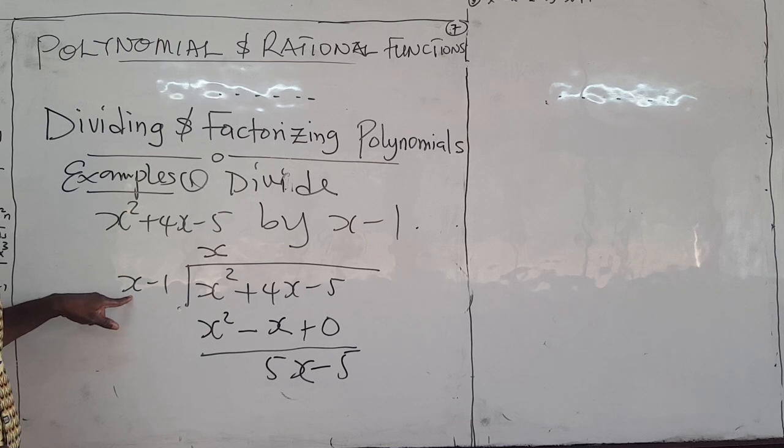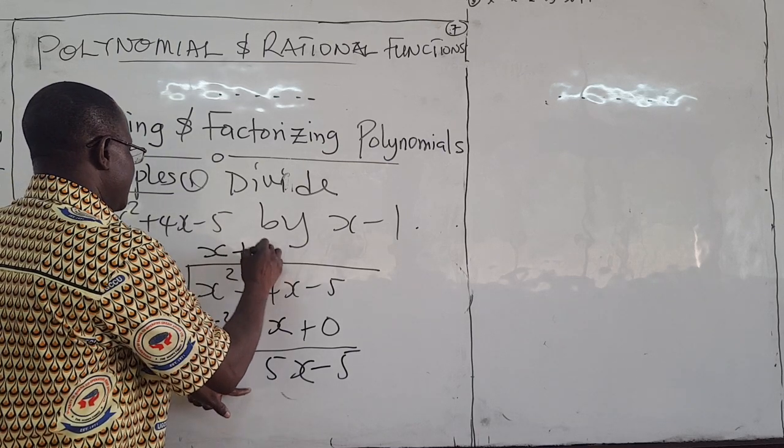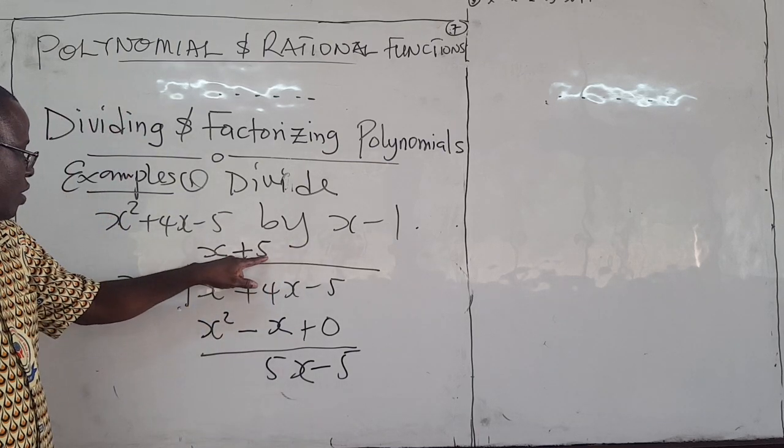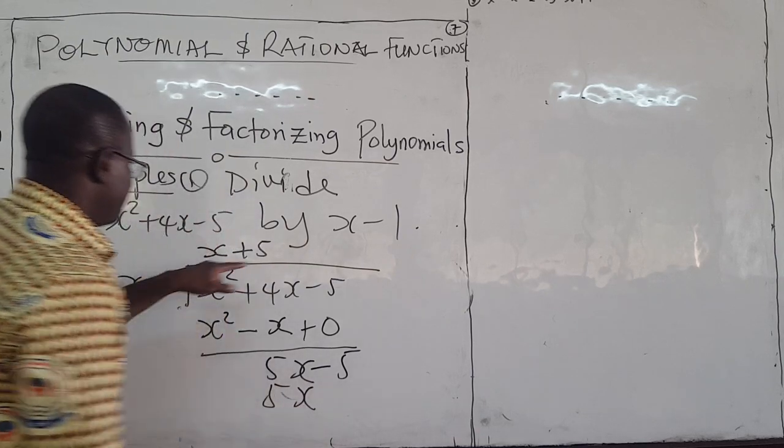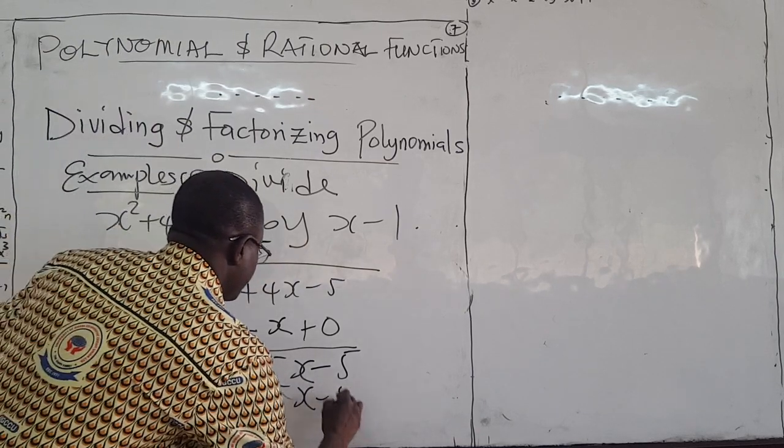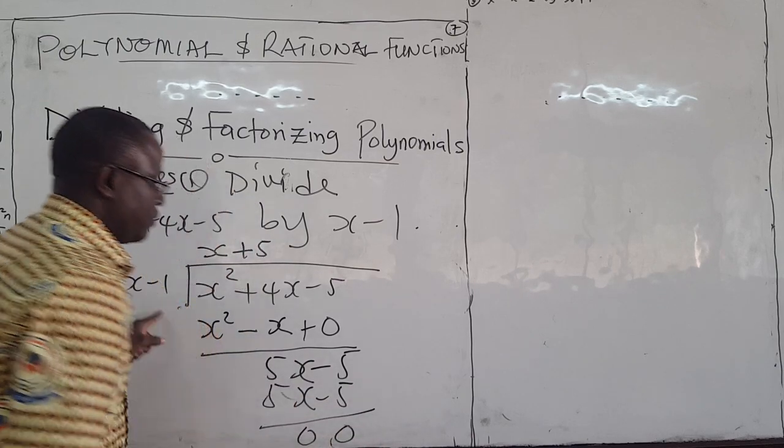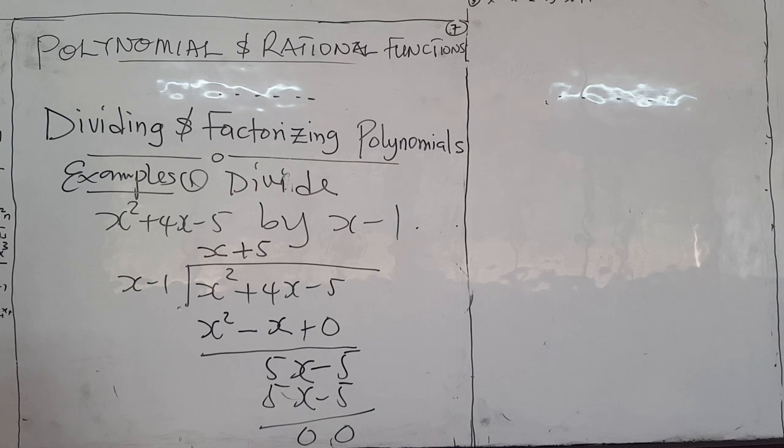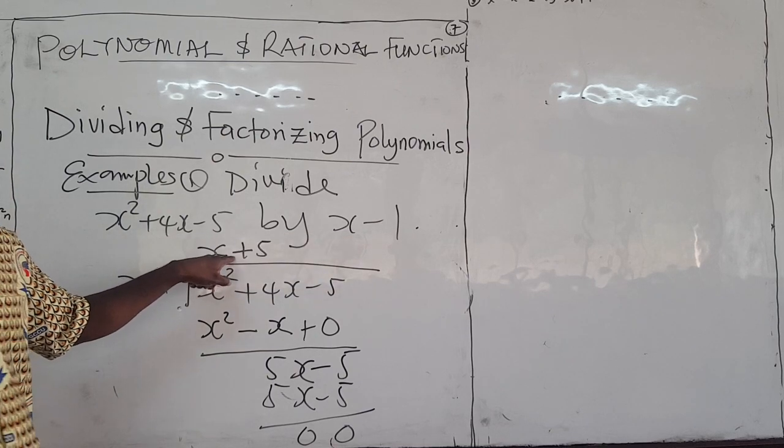Then you go back, repeat the process. x goes into 5x, you have 5. So you have positive 5 here. And then you go on, 5 times x is 5x. 5 times negative 1 is negative 5. And now, when you subtract, you get 0 and have 0. So you are done.